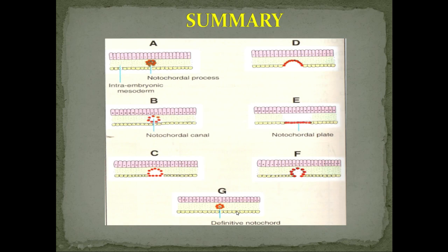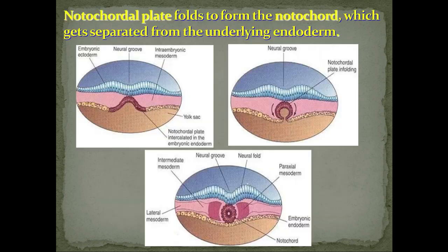To summarize: first is the notochordal process with the ectoderm and endoderm; then formation of the notochordal canal which incorporates into the endoderm; the floor breaks so communication is established; when only the roof is left, the notochord incorporates into the endoderm forming a plate; this again makes a curve forming the definitive notochord. You can also see the formation of a neural groove in the ectoderm alongside the definitive notochord.